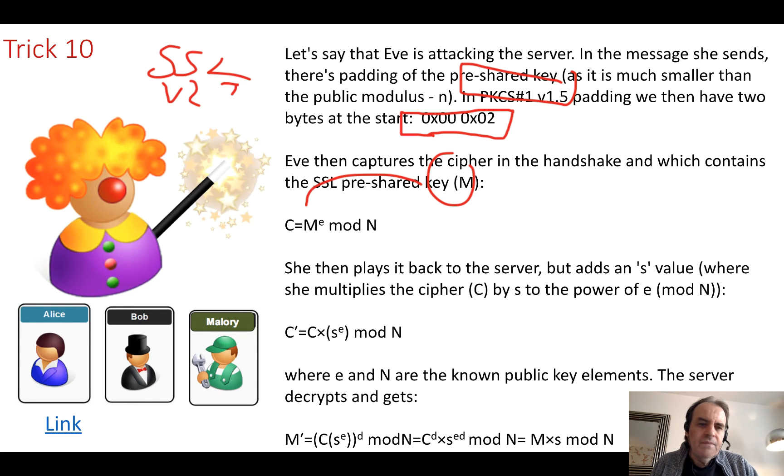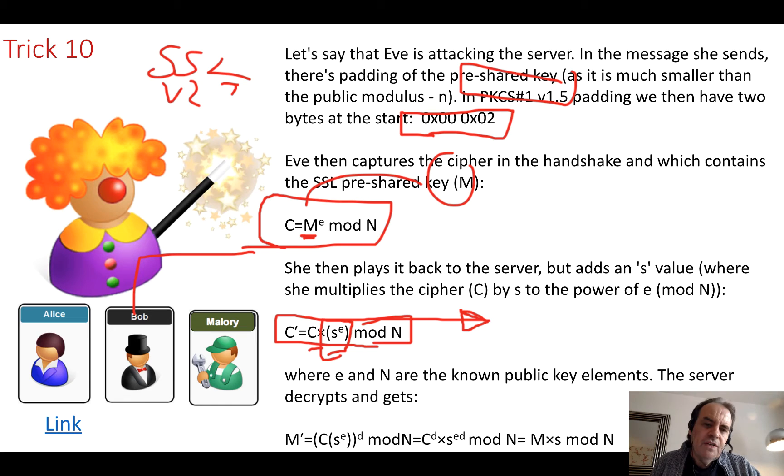Bob will create the pre-shared key, and then we have that to the power of e, mod n. That goes to the server, and the server will hopefully be able to decrypt that, and we have the session key. But what Eve does is that Eve takes the cipher and then takes a random number, and then raises that to the power of e and takes mod n. She then plays that back to the server, and she watches to see if it's correctly ciphered, if it's a correct cipher, or if she gets an error.